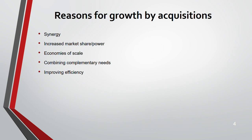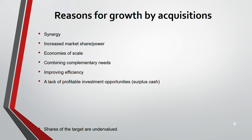Combining complementary needs means when one company has a strength in an area which is the weakness of another. By acquiring, both can use each other's resources. For example, one company might have great ideas but no finance, while the other has surplus cash but no ideas. It also improves efficiency — the target company (the company being taken over) may have had weak management, so acquiring improves their efficiency. The acquirer is the one doing the acquiring.